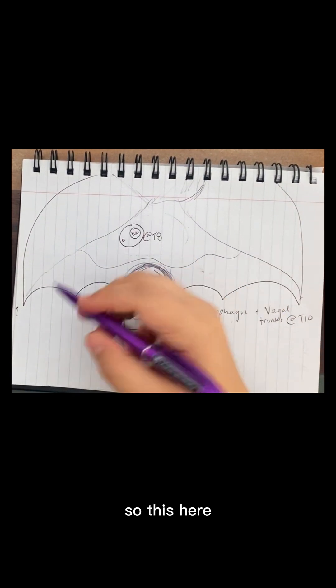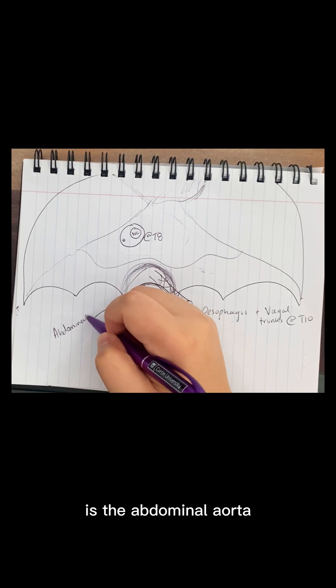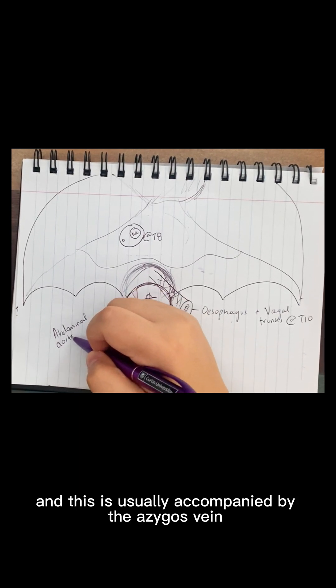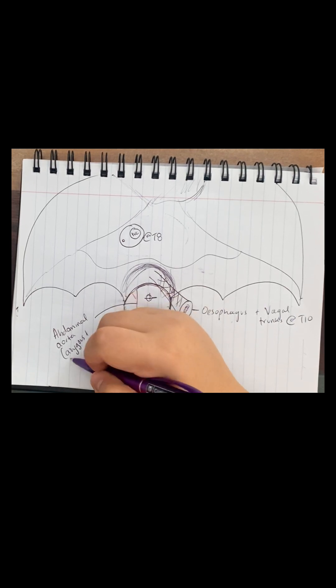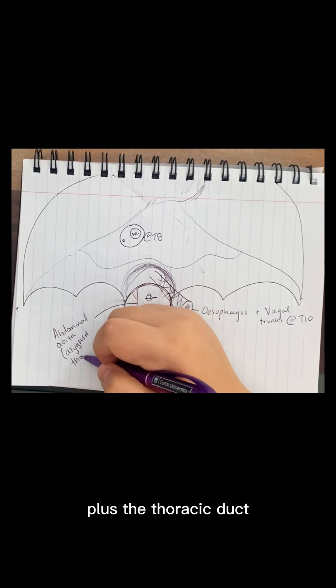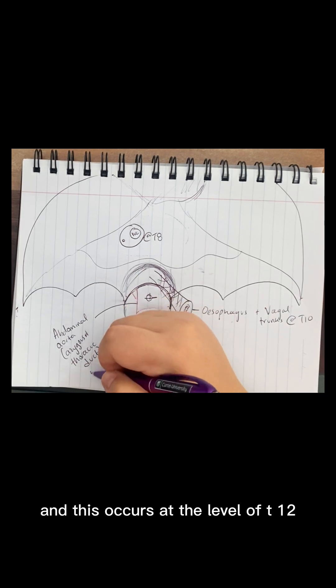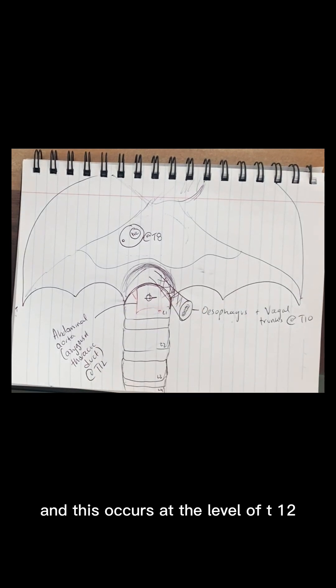So this here is the abdominal aorta. And this is usually accompanied by the azygos vein plus the thoracic duct. And this occurs at the level of T12.